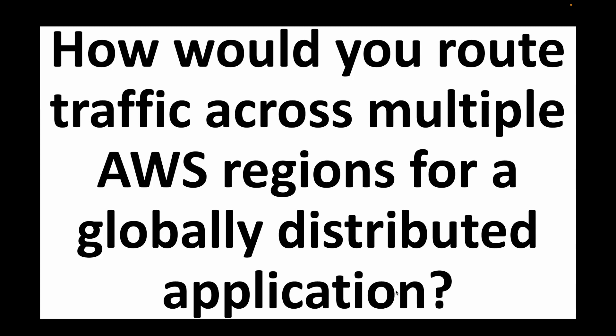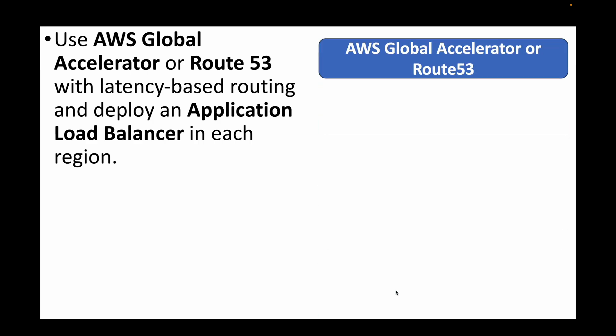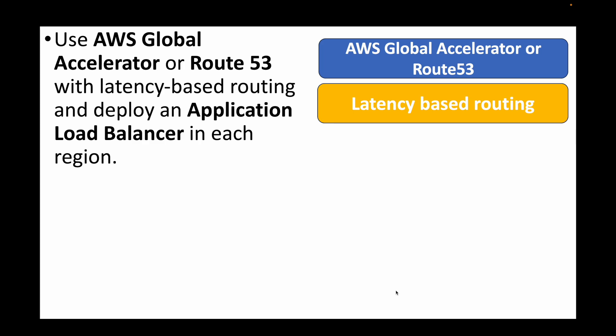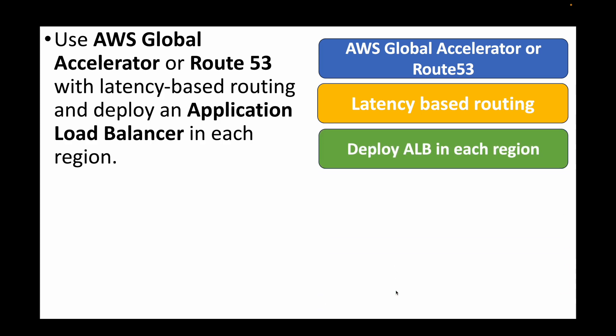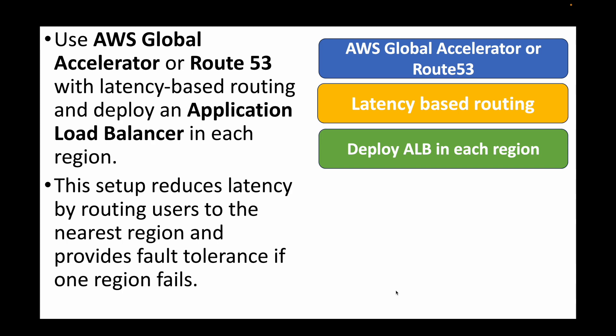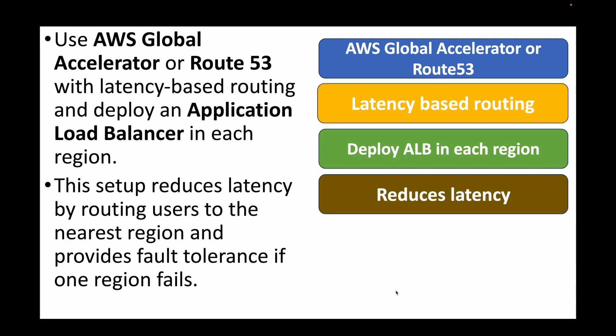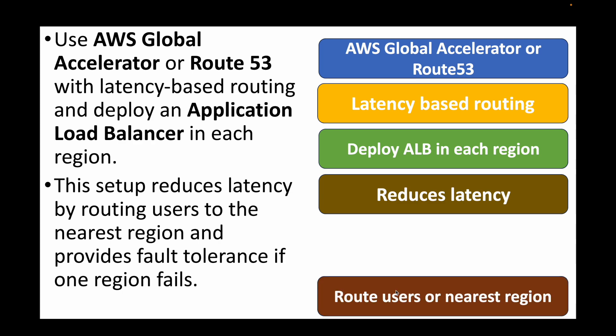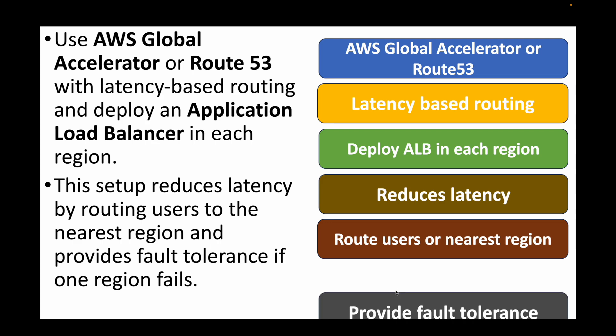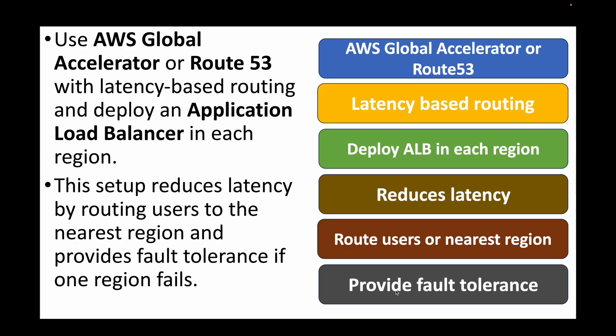The next question: how would you route traffic across multiple AWS regions for a globally distributed application? For this we can use AWS Global Accelerator or Route 53 with latency-based routing policy. We deploy our application behind an Application Load Balancer in each region. Route 53 acts as the global service, routing users to the nearest region to reduce latency and providing better fault tolerance if one region fails.